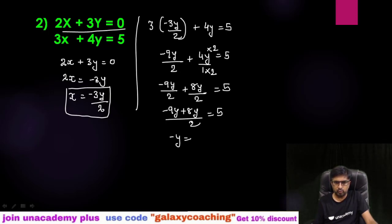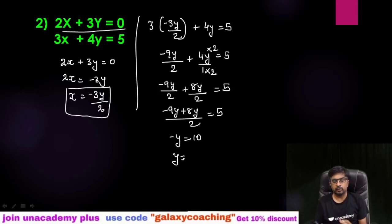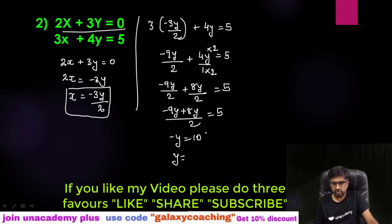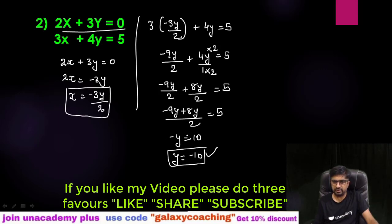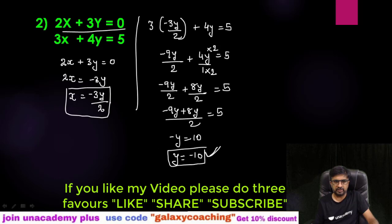Upon 2, taking the 2 over, minus 9y plus 8y gives you minus 1y, and this 2 in the denominator comes to the numerator on the other side, giving 5 times 2 equals 10. So minus y equals 10. Always keep in mind you need to find a positive value of y, so change the sign: y equals minus 10.